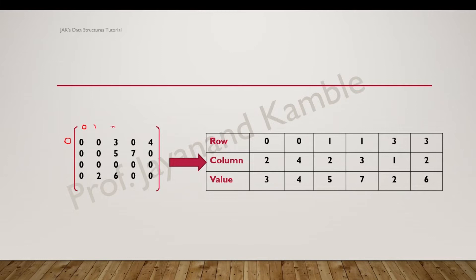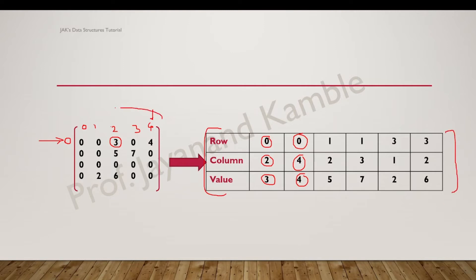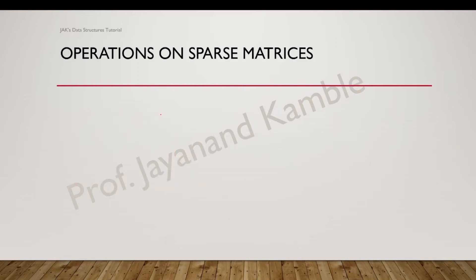For example, in row number zero and column number two we have the element 3, so element 3 is recorded at row 0, column 2. Similarly, in row number zero and column number four we have element 4, recorded as row 0, column 4. In this manner we populate the entire triple data structure for the given example.